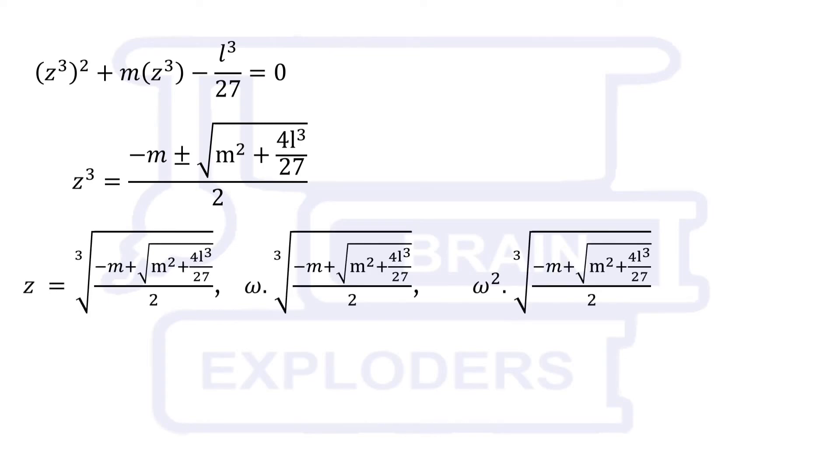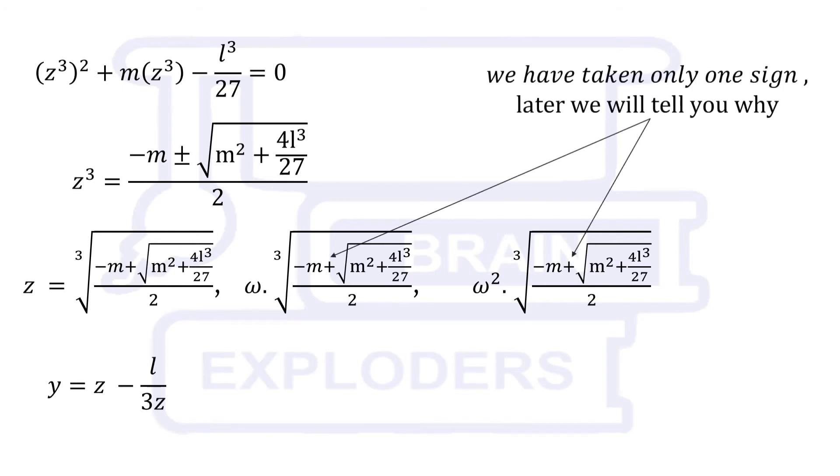In these values, instead of taking both the signs, we have taken only one because of some reason but you have to wait for it.